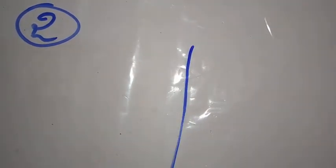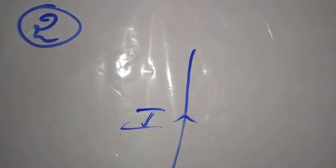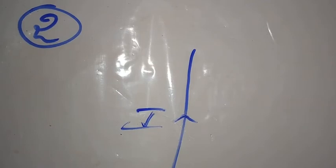Next I will move to the second problem. A long straight conductor carries an electric current. The direction of the magnetic field near it is — four options are there. Let us consider current which is flowing through the conductor in this direction. According to Biot-Savart's law, what is the direction of the magnetic field?